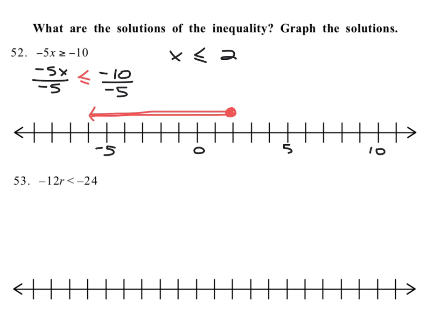Let's keep going. For negative 12r, we're going to divide both sides by the coefficient, negative 12. At exactly the same time that you do that dividing by a negative, you flip the sign. So what you get is r is greater than 2.